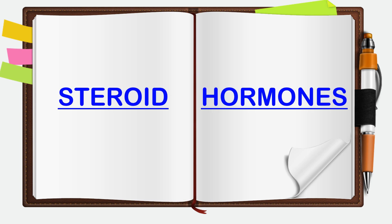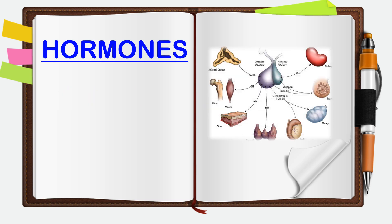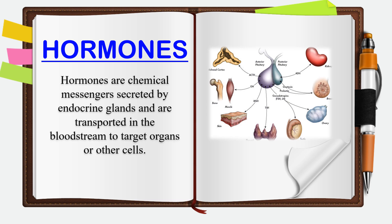Hello everyone, I'm back with another video. This time I'm going to discuss the steroid hormones — the various steroid hormones and their structures will be covered in this lecture. Before going into the examples of steroid hormones, it should be clear what hormones are. Hormones are simply chemical messengers which give messages to target cells. They are generally released by the endocrine glands and transported via blood to ultimately reach the target organ.